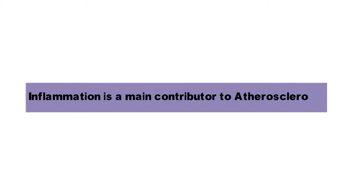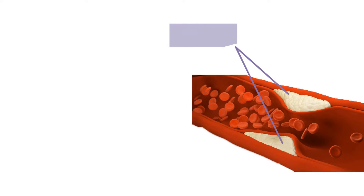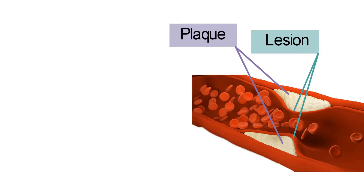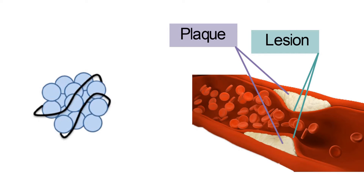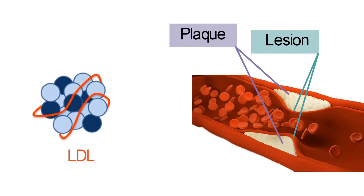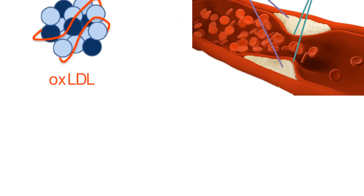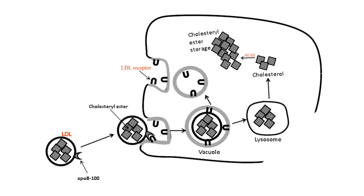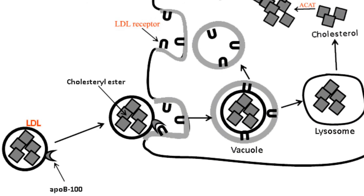Inflammation is a main contributor to atherosclerosis. The site where the plaque is accumulating is known as the lesion. Inflammation induces the formation and growth of the atherosclerotic lesion. The key to understanding how the immune system is involved in plaque buildup lies in the fact that LDL cholesterol can become oxidized when it reaches the intima. LDL cholesterol is normally taken into cells through an LDL cholesterol receptor.